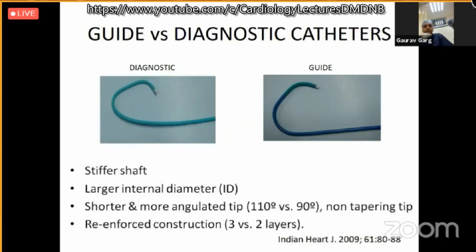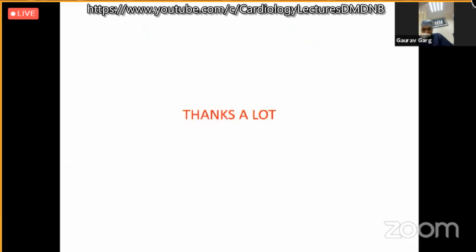Some basic differences between guide catheters and diagnostic catheters: guide catheters are stiffer, have a larger internal diameter to accommodate larger devices and stents, are more angulated compared to diagnostic catheters, and have more layers inside for better reinforcement. Thanks a lot.